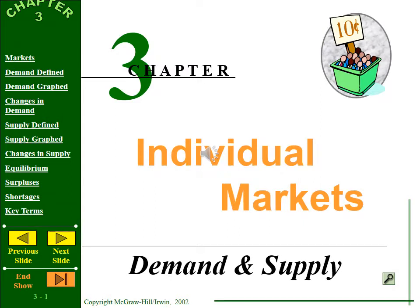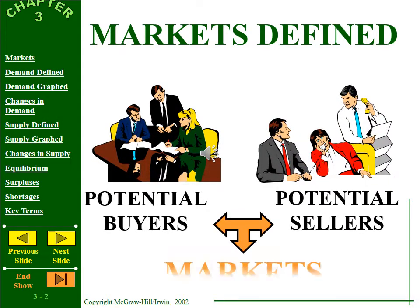Welcome to Supply and Demand Individual Markets, Chapter 3. It's one of the most important units in our pursuit of economic knowledge. A market is simply a place where buyers and sellers come together. It can be very complex, like a stock market, or it can be as simple as a garage sale.